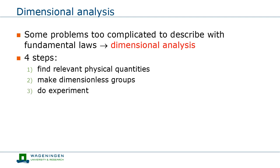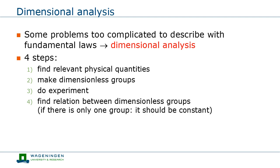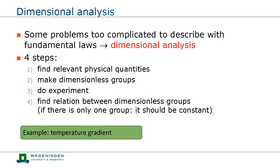For the third step, you have to leave your desk. Go out and do an experiment in which you measure all quantities that you identified in the first step. And then finally, with your observations, you return to your desk and you plot the relationships between the dimensionless groups. If all went well, you will find a unique relationship. Here, we will use the vertical temperature gradient as an example, which should in the end provide us with the information we need to determine the relationship between the heat flux and the vertical temperature gradient.